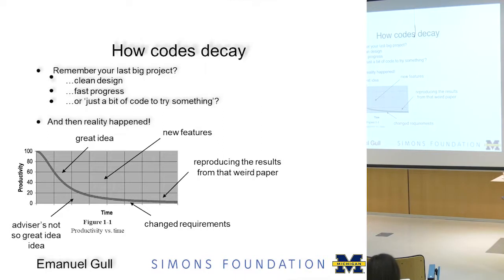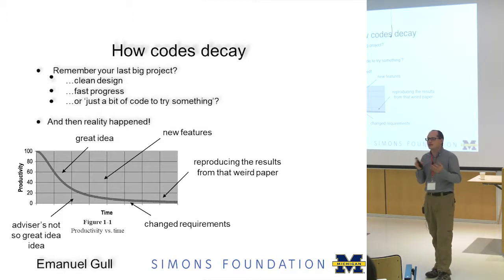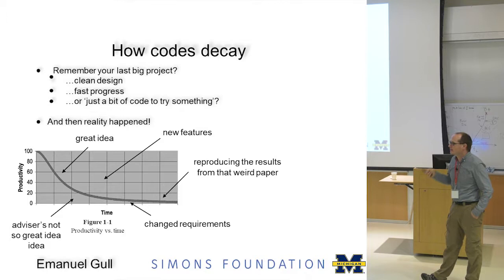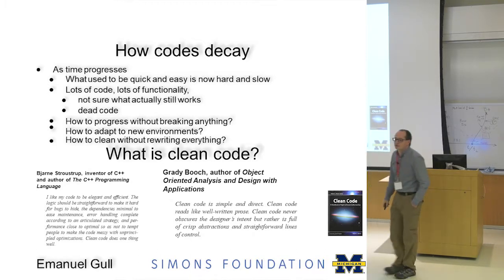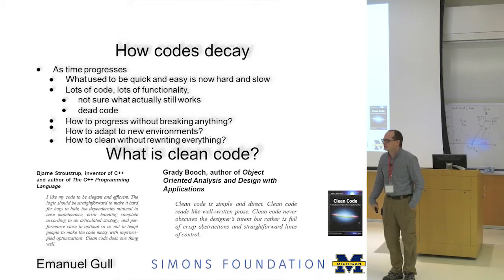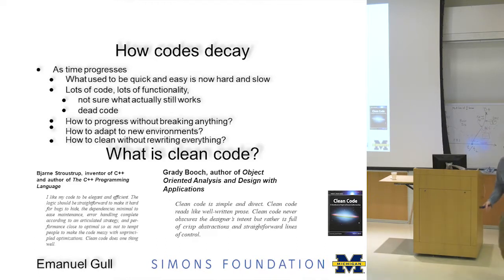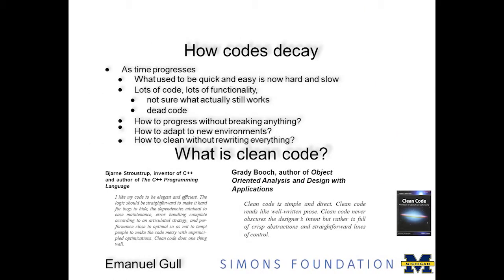You had to add new features, reproduce additional results, change requirements. That nice design you had originally just wasn't quite as good anymore. What used to be quick and easy becomes hard and slow. There's lots of code, lots of functionality, and you're not quite sure what actually still works. You have a lot of dead code — everybody has dead code somewhere. You're not quite sure how you can progress without breaking anything, or if you haven't already broken something and just haven't realized it.